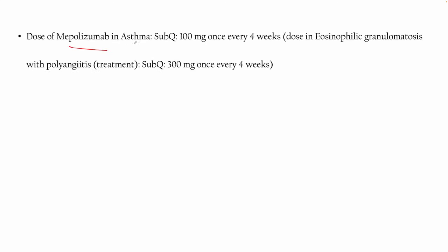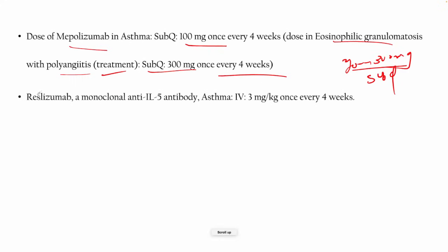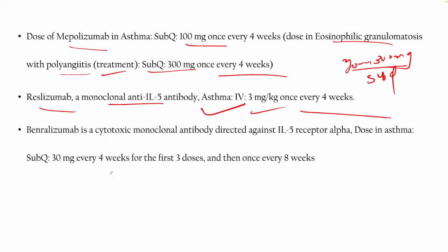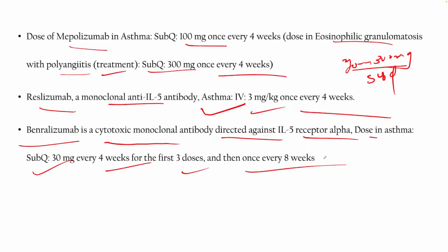Mepolizumab dose is subcutaneous 100 mg every 4 weeks. For eosinophilic granulomatosis with polyangiitis (EGPA), the dose is increased to 300 mg subcutaneous every 4 weeks. Reslizumab (anti-IL-5 monoclonal antibody) is given IV at 3 mg/kg once every 4 weeks. Benralizumab, a cytotoxic monoclonal antibody directed against IL-5 receptor alpha, is given subcutaneous 30 mg every 4 weeks for 3 doses, then once every 8 weeks.